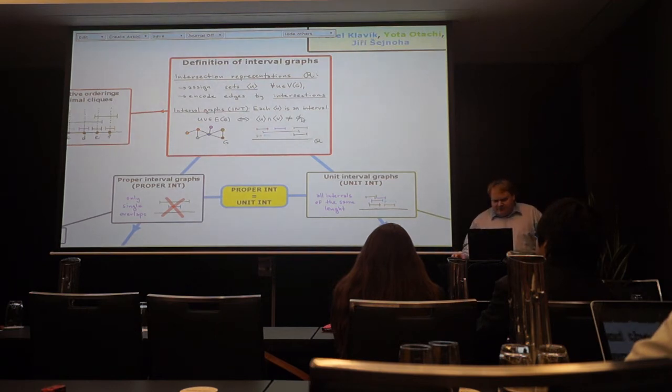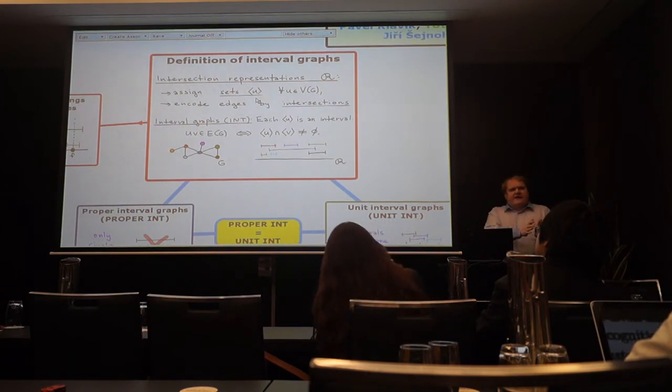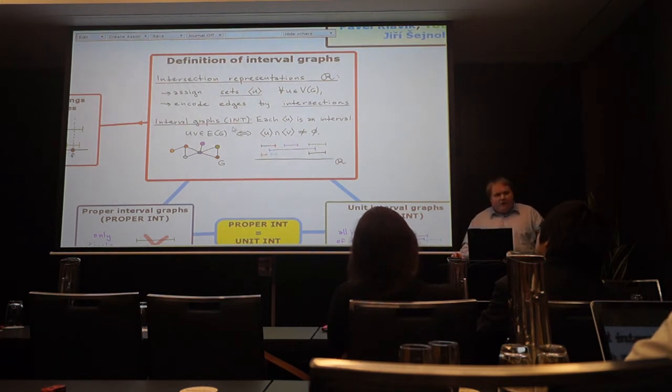So basically from the drawing we can see some structural properties of the graph. In particular here we deal with so-called intersection representations. The idea is a little bit crazy at first, but it works very nicely. So basically we assign a set to every vertex and two vertices are adjacent if and only if these sets intersect. So in the case of interval graphs, all these sets are closed intervals of the real line.